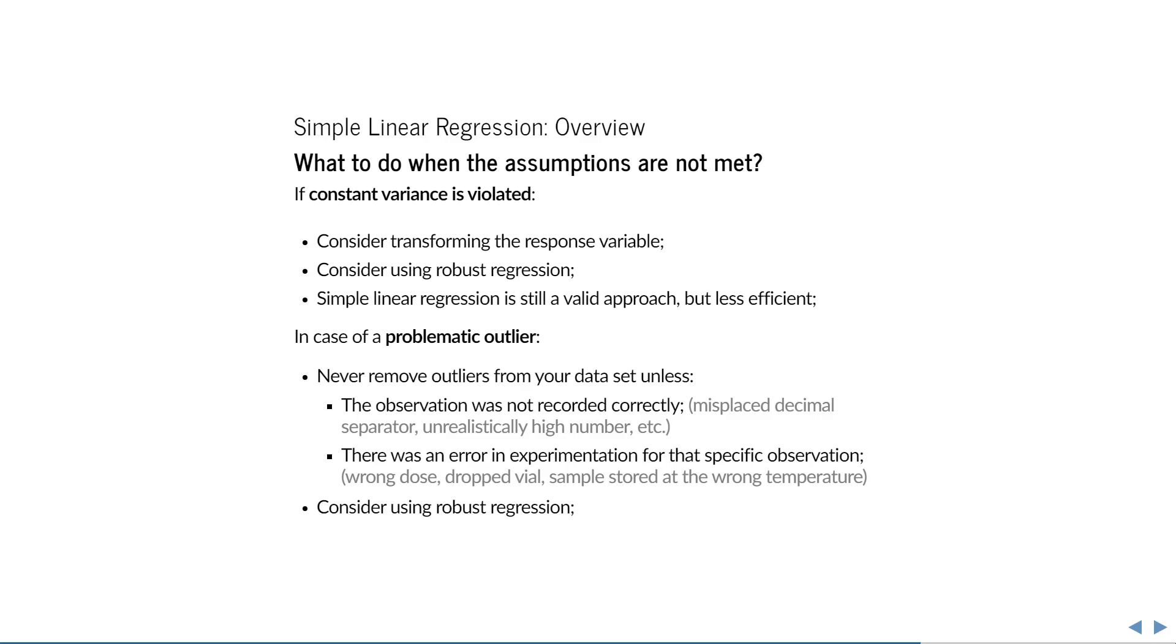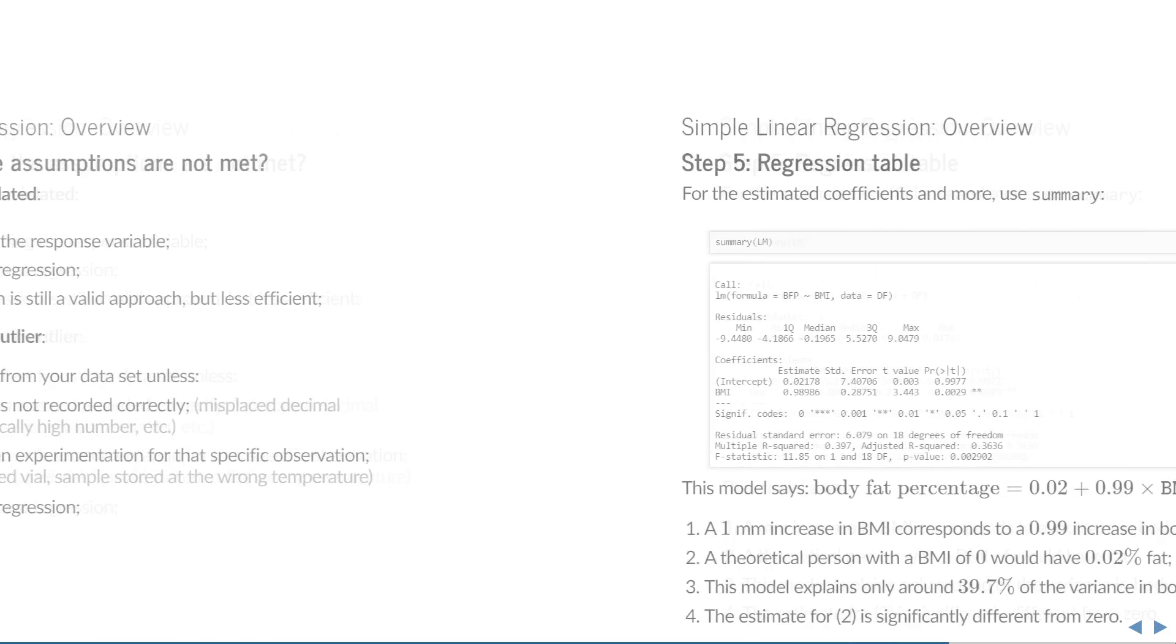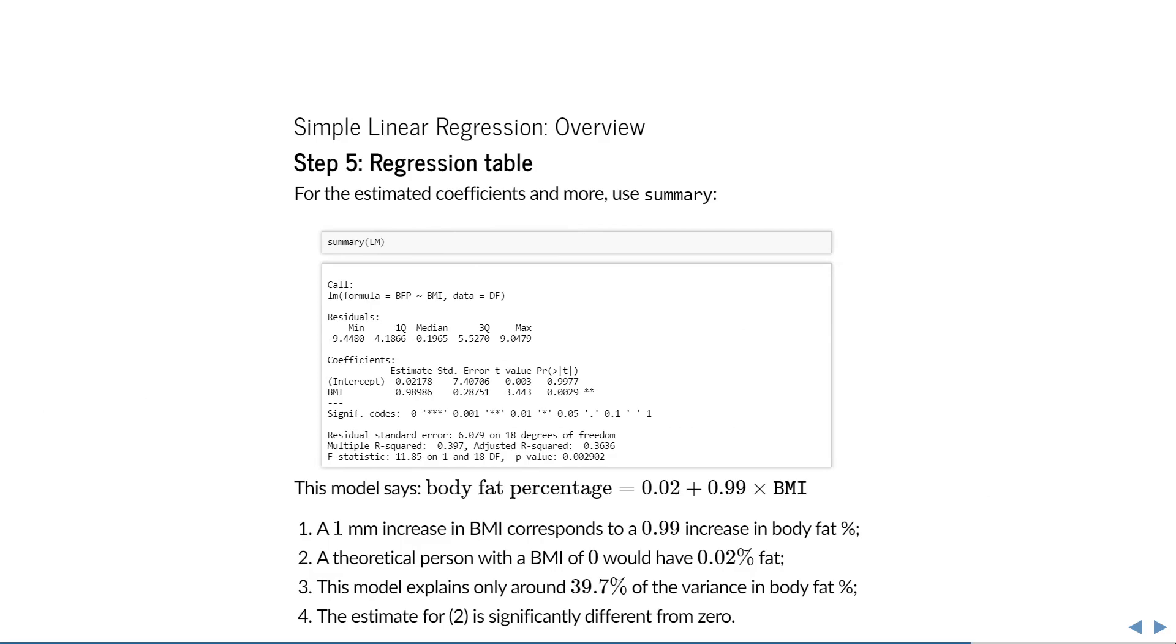Problematic outliers are the most difficult to deal with. A high Cook's distance is not enough reason to remove an observation. Removal is only warranted if you can justify the reason. Possible reasons could be corrupted entries or errors in experimentation. But if you cannot explain why the observation is outlying, then you should leave it in the data and use robust regression for example. That was a long detour, but I just want to emphasize the importance of being able to defend your choice of model before drawing any conclusions from it.